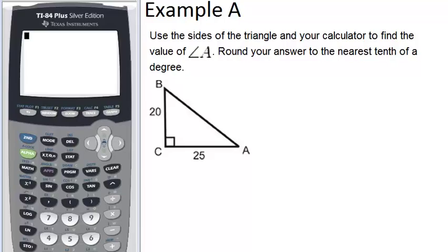In example A, it says use the sides of the triangle and your calculator to find the value of angle A. Round your answer to the nearest tenth of a degree.